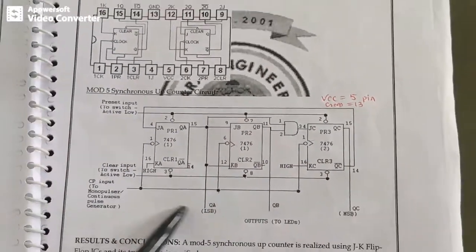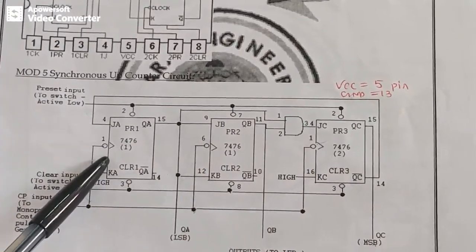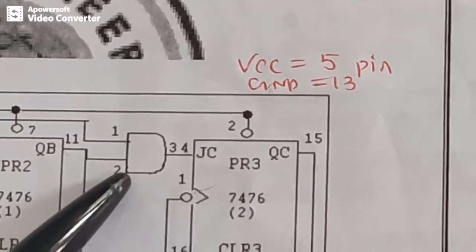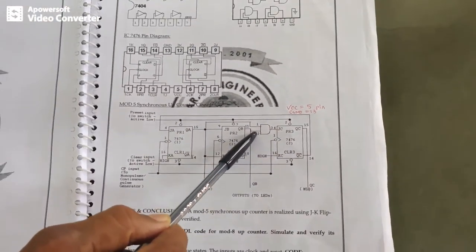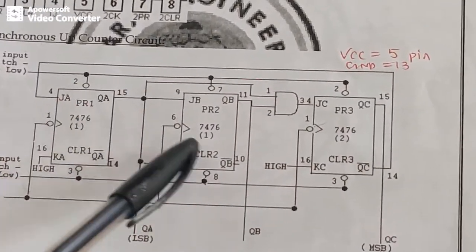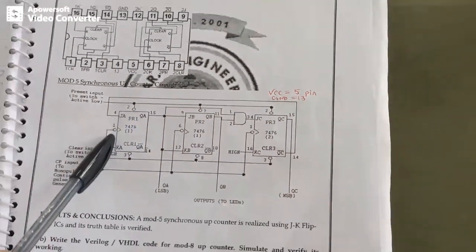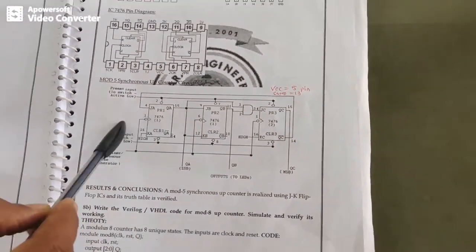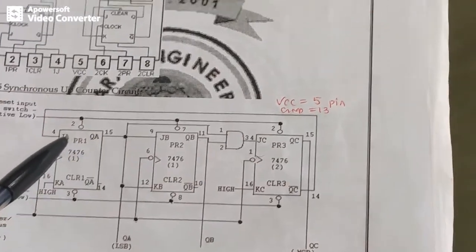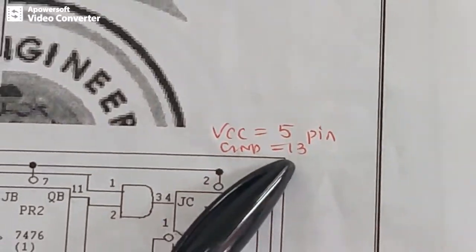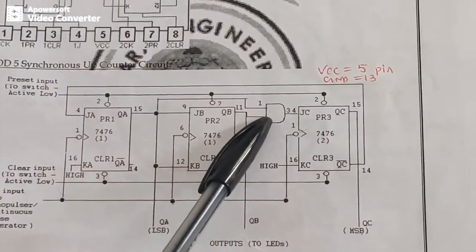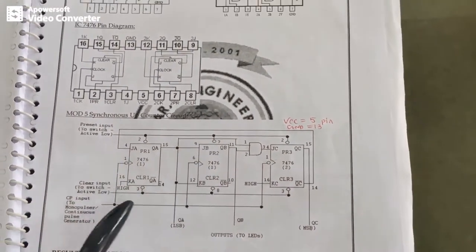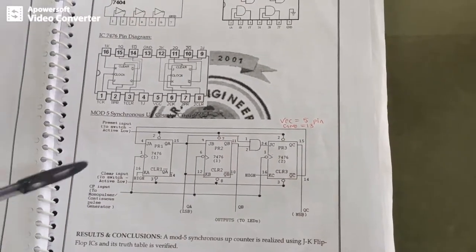The circuit diagram for the mod 5 counter requires 2 ICs of 7476 and 1 AND gate IC 7408. The 7476 is a 16-pin IC and the AND gate 7408 is a 14-pin IC. Note: for 7476, VCC is pin 5 and ground is pin 13. For 7408, VCC is pin 14 and ground is pin 7.